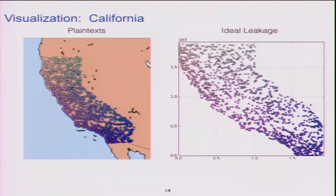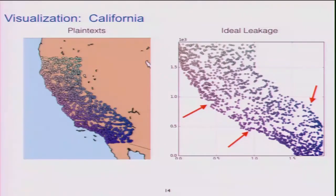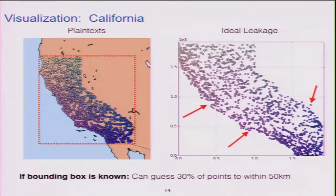Here's the penguin attack done on real data with road intersections. On the left, I've plotted the latitude and longitudes on a map. On the right is the ideal leakage: if you just learned the latitudes and longitudes are ranked 0 to 2,000 out of 21,000 points, you would learn essentially nothing from those individual ORE-encrypted columns. But when you put them together and plot them on a grid, you can still see Los Angeles, the Bay Area, and outlier points. By scaling the distorted result given the bounding box for California, you get about a third of the points to within 50 kilometers.